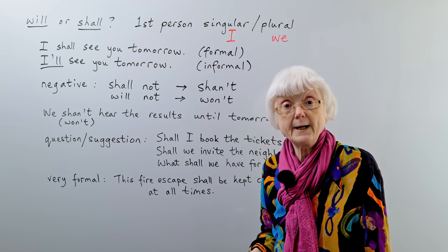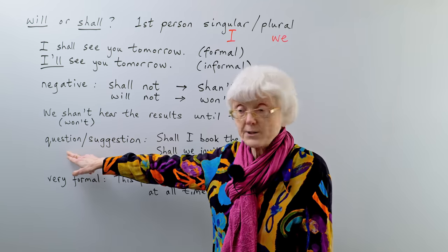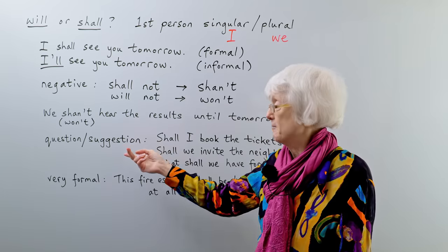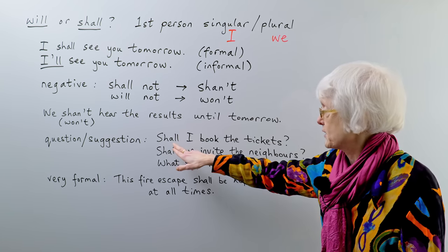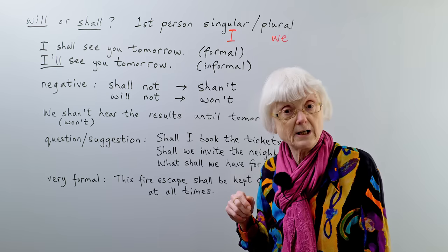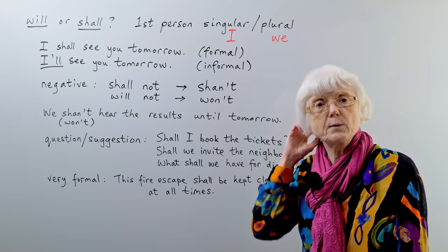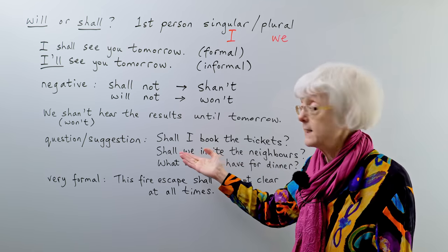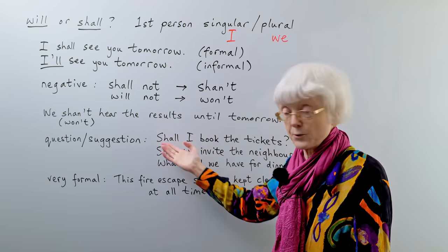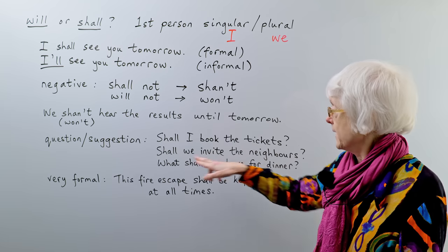I think the most usual way that it's used is when someone makes a suggestion or they ask a question about, well, it's a question that's also a suggestion quite often, or it's asking for a suggestion. Like, shall I? Shall I book the tickets? We want to go to the theatre. So, shall I book the tickets for next Wednesday? Shall I? So, you wouldn't say, will I? So, this is a very particular way, probably the most usual way nowadays, that you would use shall in this sort of question, suggestion. You wouldn't say, will I book the tickets? That's not quite so natural.